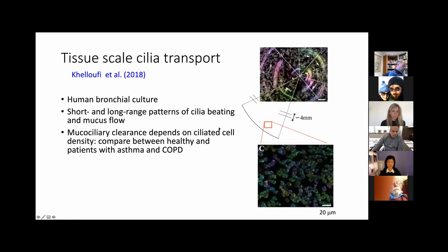Most of the mathematical models have been in a much smaller scale than the relevant tissue scale. Here's a recent paper studying human bronchial culture. The goal was to compare between healthy and patients with asthma and COPD. They used super fast microscopy to demonstrate long and short time scale and long and short range patterns of cilia beating and mucus flow. You can see in the centimeter scale, these large scale vortices and in the 10, 20 micron, 100 micron scale, you see the small rotations.